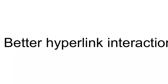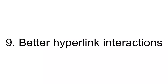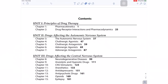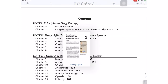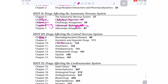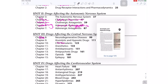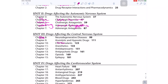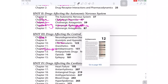Number nine, improved hyperlink interactions. Yes, this definitely needs some work. Notability needs to find a way to deactivate hyperlinks when writing on hyperlinked PDFs. It's really annoying when you accidentally activate hyperlinks when you don't want to use them. This is really time consuming and it really does slow you down on your work.